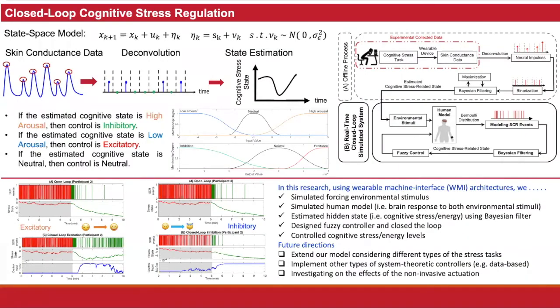In a similar way, we take the skin conductance data to estimate the cognitive stress state as a second project. Then we design the fuzzy control to close the loop and regulate the estimated cognitive stress state. As an example, the aim was to increase the number of spikes in the second half of the experiment as the excitatory class of controls. And for the inhibitory, the goal was to lower the number of spikes and also decrease the levels of the cognitive stress state.